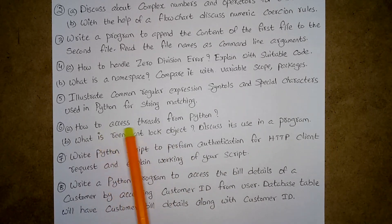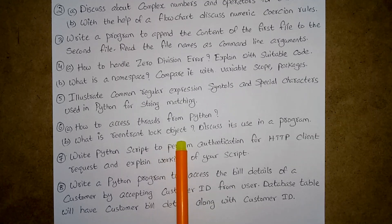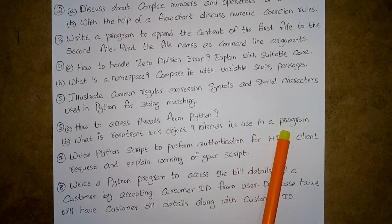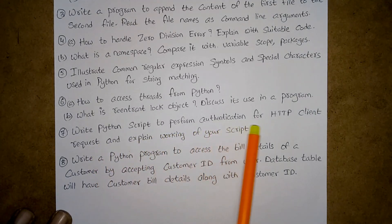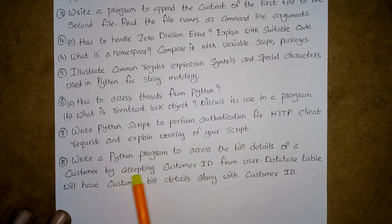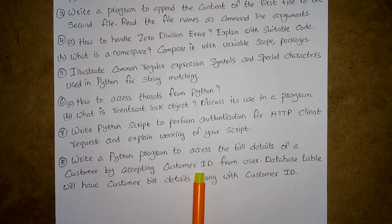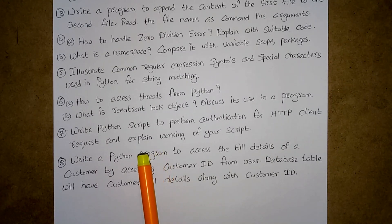Sixth question: (a) How to access threads from Python? (b) What is a reentrant lock object? Discuss its use in a program. Seventh question: Write a Python script to perform authentication for an HTTP client request and explain the working of your script. Eighth question: Write a Python program to access the bill details of a customer by accepting a customer ID from the user — the database table will have customer bill details along with customer ID.